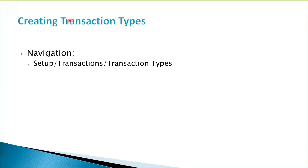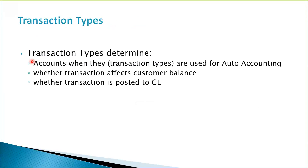This is the navigation for creating transaction types. Transaction types determine several things: you can use them for auto accounting, as we are going to do. When we create our transaction type, we will see a place to specify accounts. Transaction types also affect whether the transactions you enter under this type affect the customer balance — an option referred to as Open Receivable — and whether transactions are posted to GL. So let's follow this navigation.